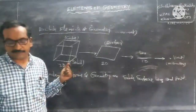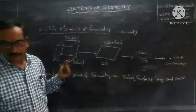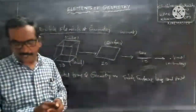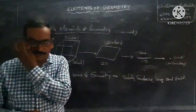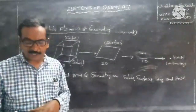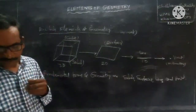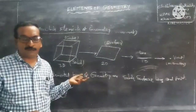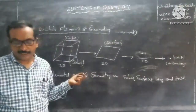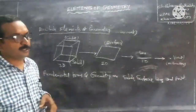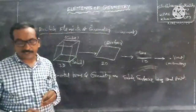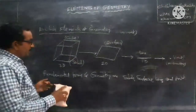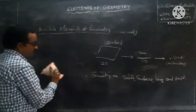With the use of these fundamental terms, objects like line segments, angles, and triangles are defined. Euclid defined point, line, and plane in Book 1 of the Elements. Euclid listed 23 definitions in this first book. Now we will discuss some of the important definitions from those 23 definitions.